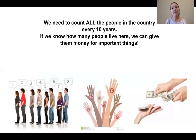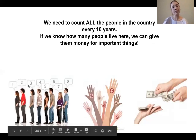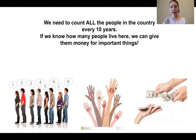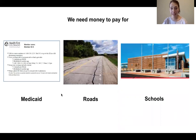We count the people in America every 10 years. If we know how many people live in America, live in Colorado, live in Aurora, we can give money for important things. For example, we have 8 people here — they are all counted for. We have these individuals raising their hands, showing that they need money for important things like Medicaid, roads, and of course schools.